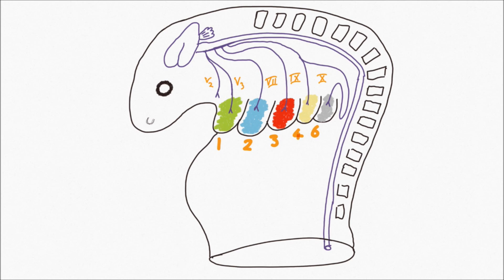The mesenchyme from each arch forms the muscles associated with the cranial nerve supplying that particular arch. For example, the first pharyngeal arch is supplied by the mandibular division of the trigeminal nerve. Therefore, the muscles derived from it are the muscles of mastication.